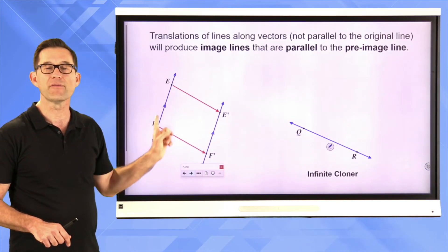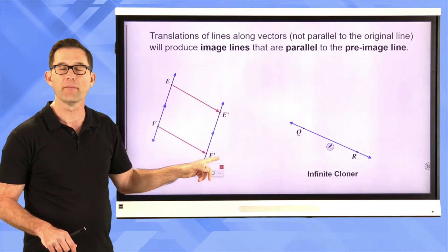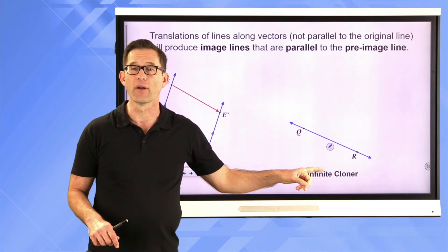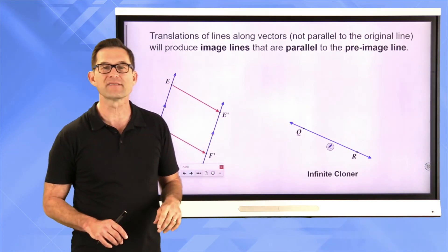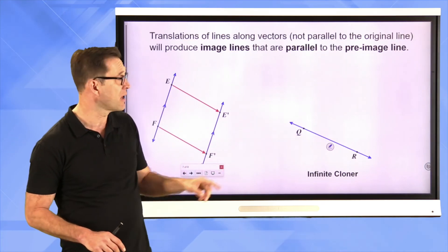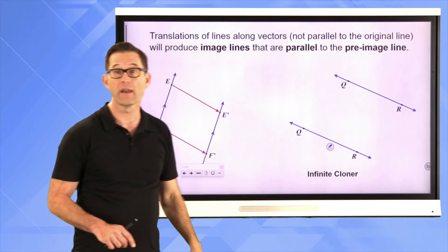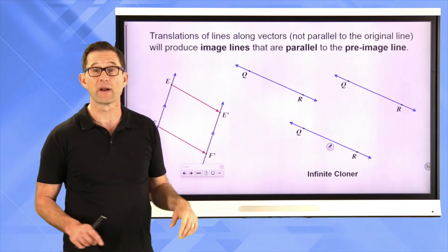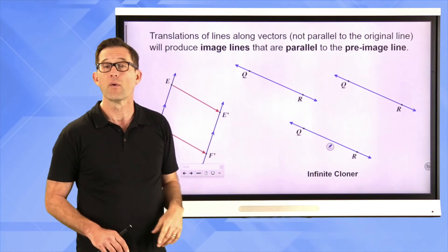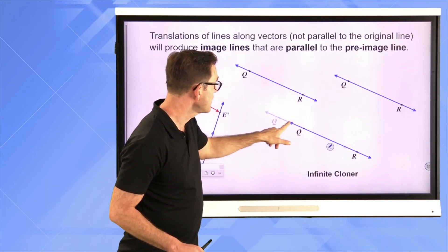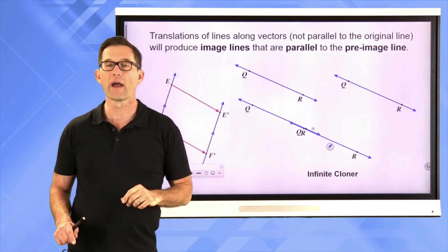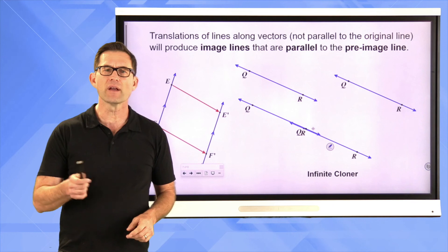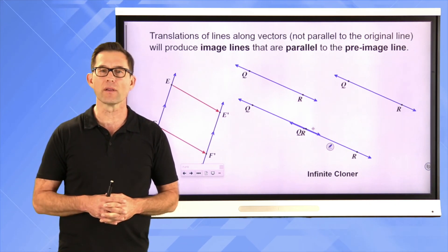For instance, if I have line EF and translate it down to get line E prime F prime, those two lines are parallel. If I take the line and just move it up, again by translation, that line is parallel to the original. The only way I wouldn't get another parallel line is if I literally translated the line in the same direction as the original — then it's just the same line. But that's an important property of translations: translating a line produces an image line parallel to the pre-image line.